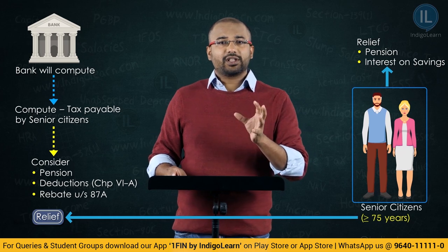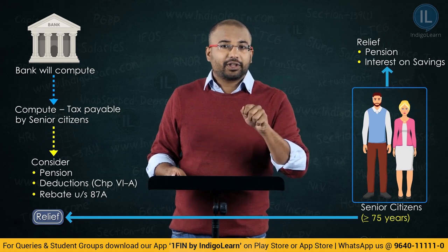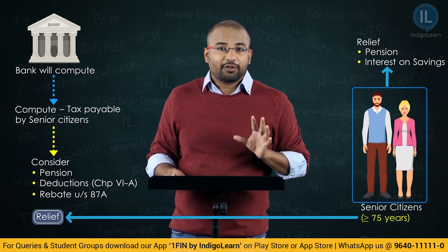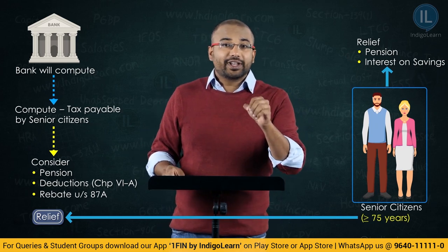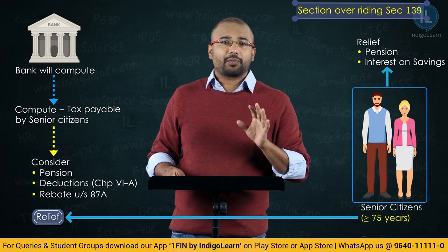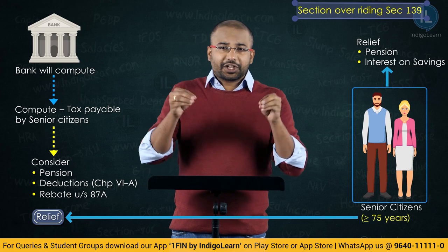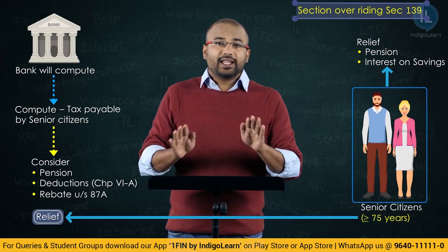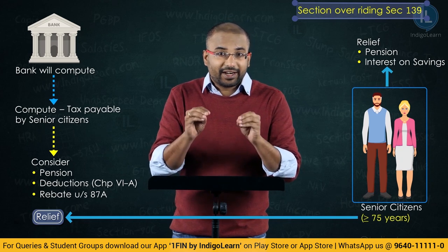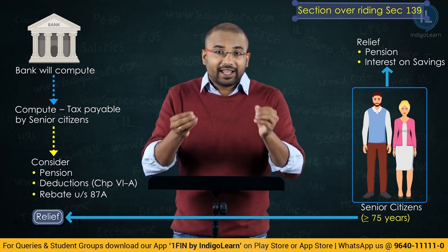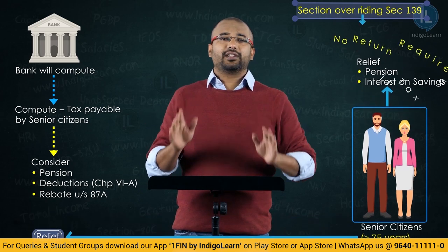Now notice — the bank has done the job of computation of income and payment of tax. Therefore, this section acts as an overriding section over Section 139, which is the primary section asking you to file a return. It says: if this section has been followed, and the senior citizen who has attained the age of 75 has given a declaration to the bank, and the bank has deducted the TDS after calculating the tax — no need to file a return separately.